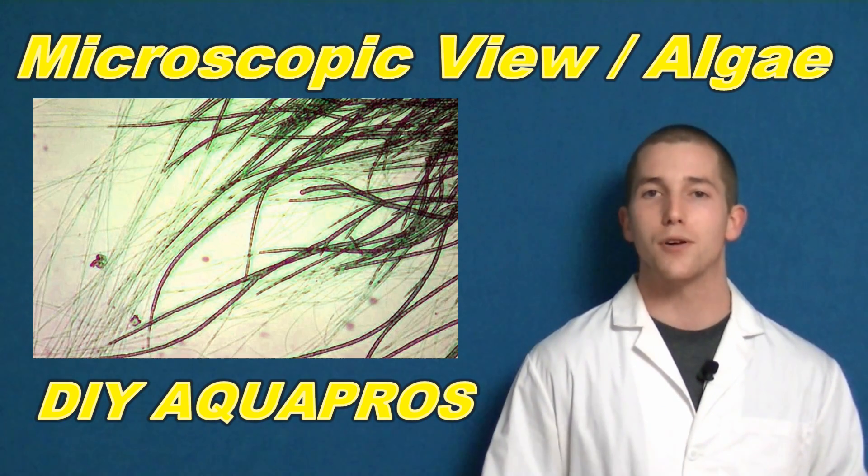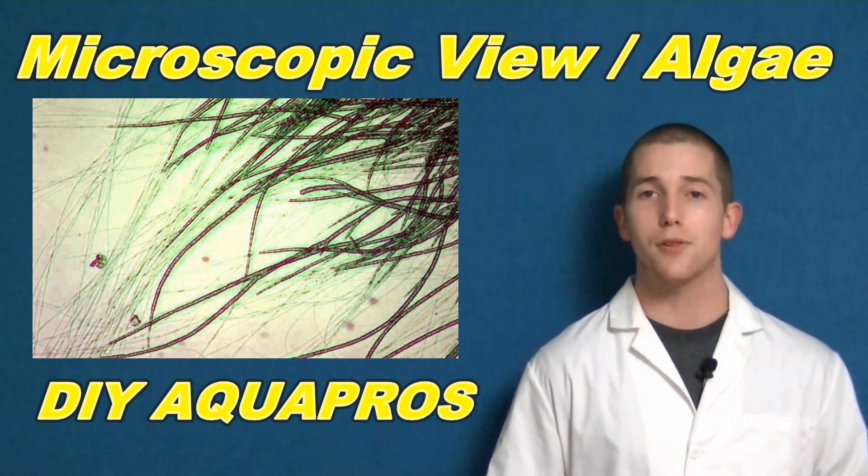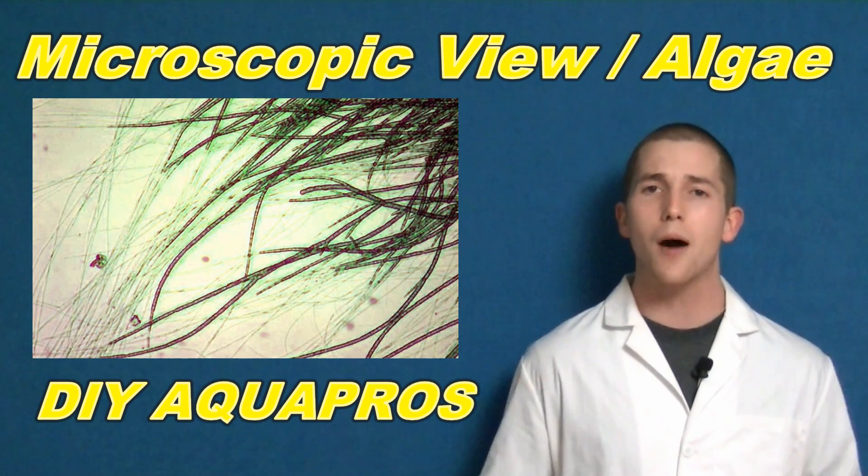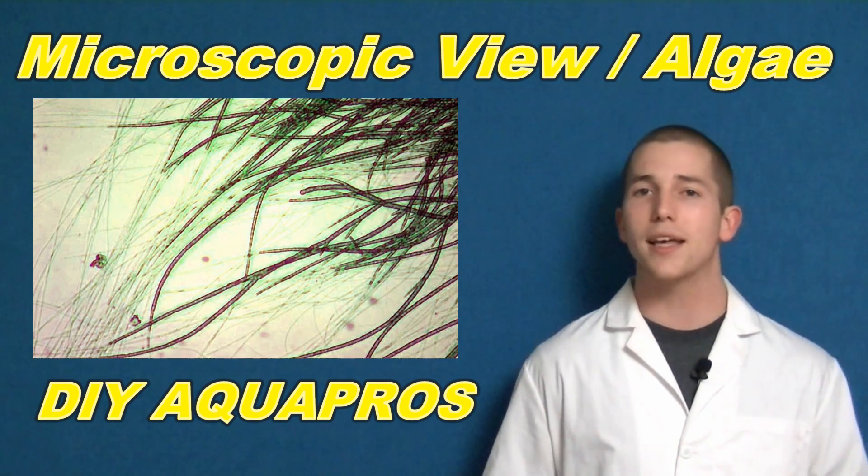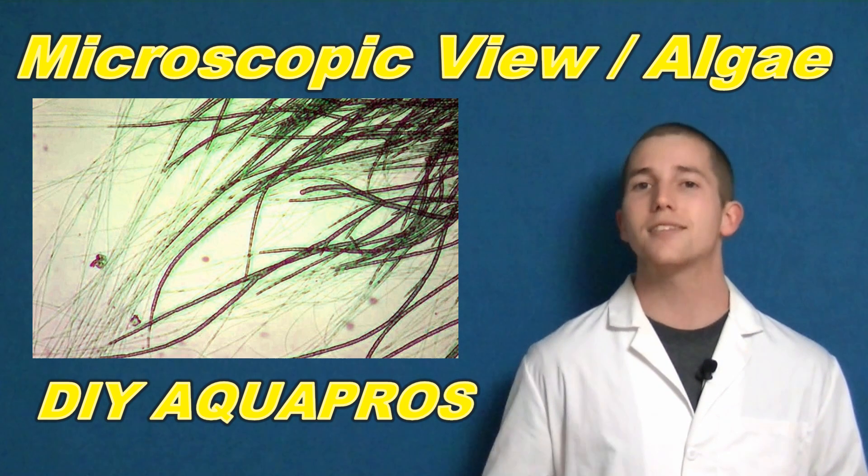Hey everybody, Mike here from DIY Aquapros. Today we're going to be taking a microscopic look at three different forms of algae commonly found in the aquarium. We're going to discuss their different morphologies and try and key out some important structures. Let's take a look.